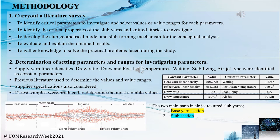We identified the optimum values of constant parameters and the optimum ranges for variables. Previous literature, supply specifications, and a few test samples were used in determining the most suitable values. In the image below, you can clearly see the developed slab geometrical model. With different degrees of entanglements and different loop sizes, the slab yarn can be clearly divided into two sections: the base yarn section and the slab section. These two sections heavily influence the final yarn properties and fabric properties.